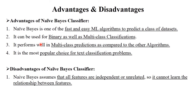Now for advantages and disadvantages. The main advantages of Naive Bayes classifier are: it is a fast and easy machine learning algorithm to predict classes in a dataset; it is used in both binary and multiclass classification; it performs well in multi-class prediction; and it is a popular choice for text classification problems. The disadvantage is that Naive Bayes is completely dependent on features, but sometimes features in a dataset are unrelated or independent. In that case, this algorithm cannot work well — it works only when features are dependent or similar.